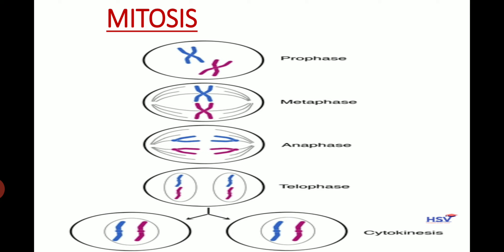In metaphase, the nuclear membrane disappears. The chromosomes arrange themselves at the center of the cell and attach to thread-like structures.